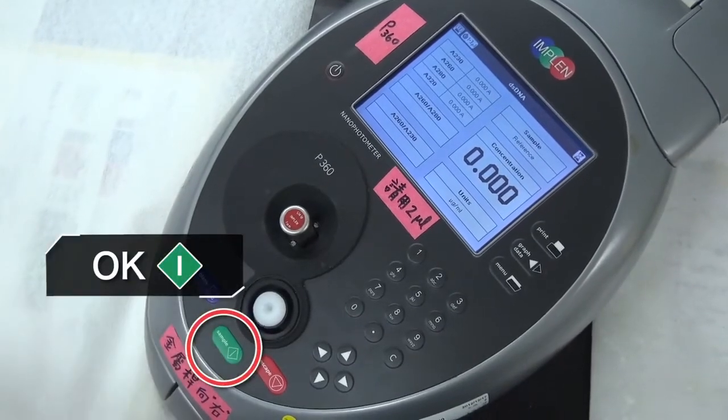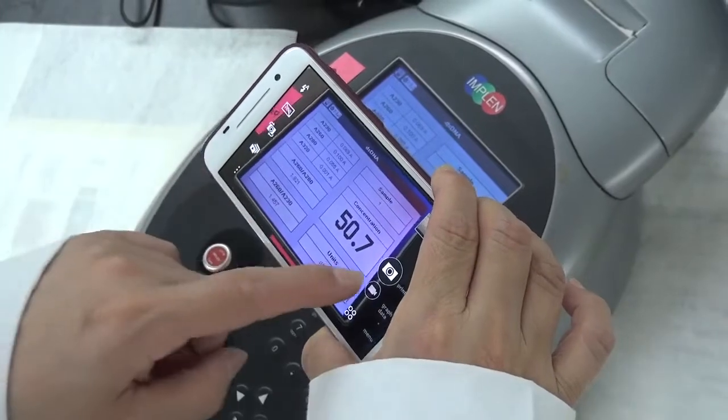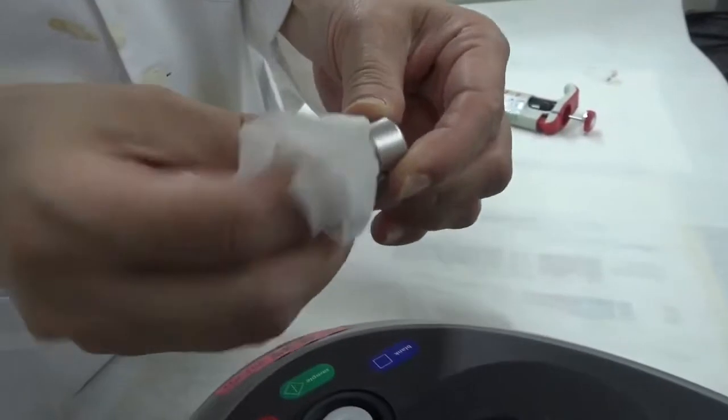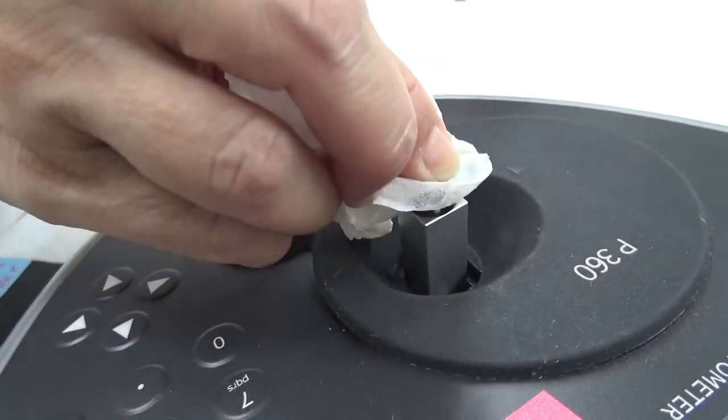14. Press OK to start measuring, and wait for the value to stabilize. 15. Use a cell phone to take pictures as a record. 16. Remove the lid. Wipe clean the lid and the sample well of the cuvette with a Kimwipes tissue.